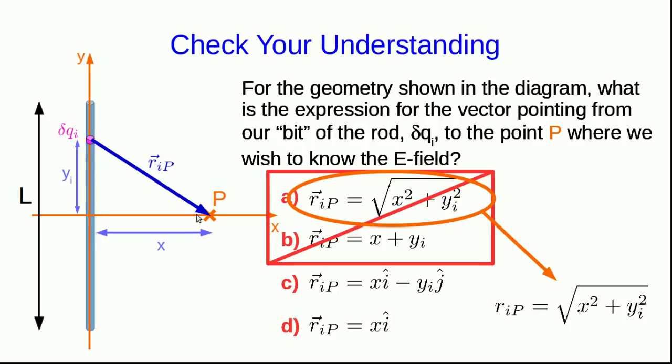The r_IP vector, which is this arrow, goes over in the x direction, a distance we've just called x, and so its x component is just x.